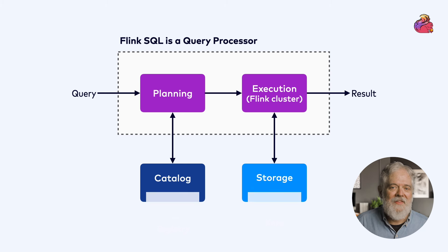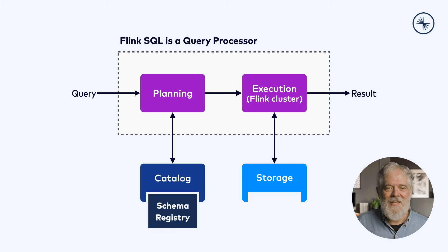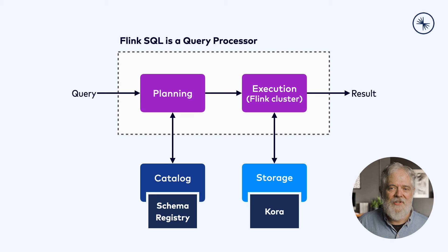In Flink, the catalog and storage layers are pluggable. In Confluent Cloud, the schema registry acts as the Flink catalog, and Kafka supplies the storage layer. Kafka is Confluent's cloud-native storage engine. A very important characteristic of a database is that we can rely on it to produce correct results. Flink SQL can provide either exactly once or at least once guarantees, depending on how Flink has been configured, and depending on which external systems are storing the input and output tables.